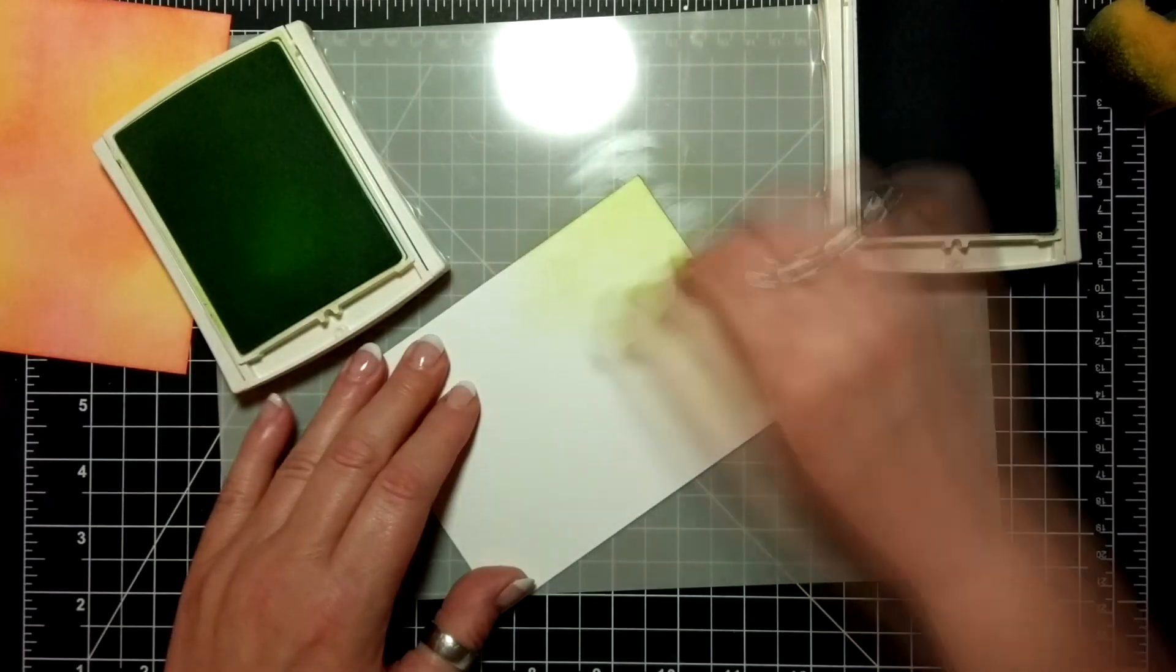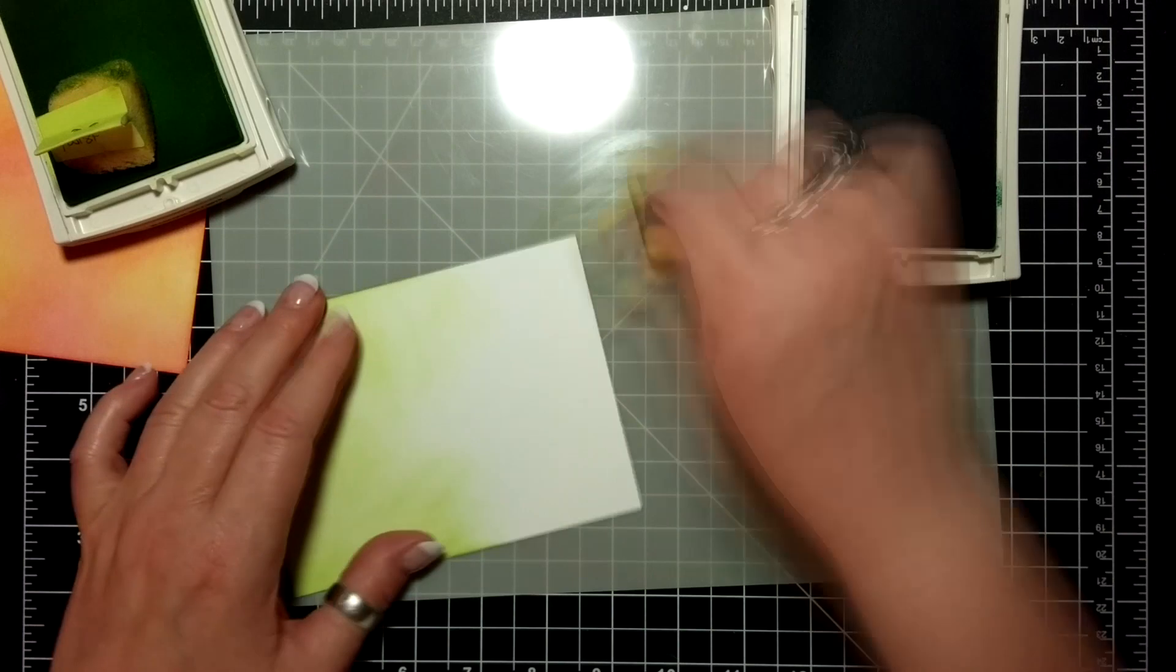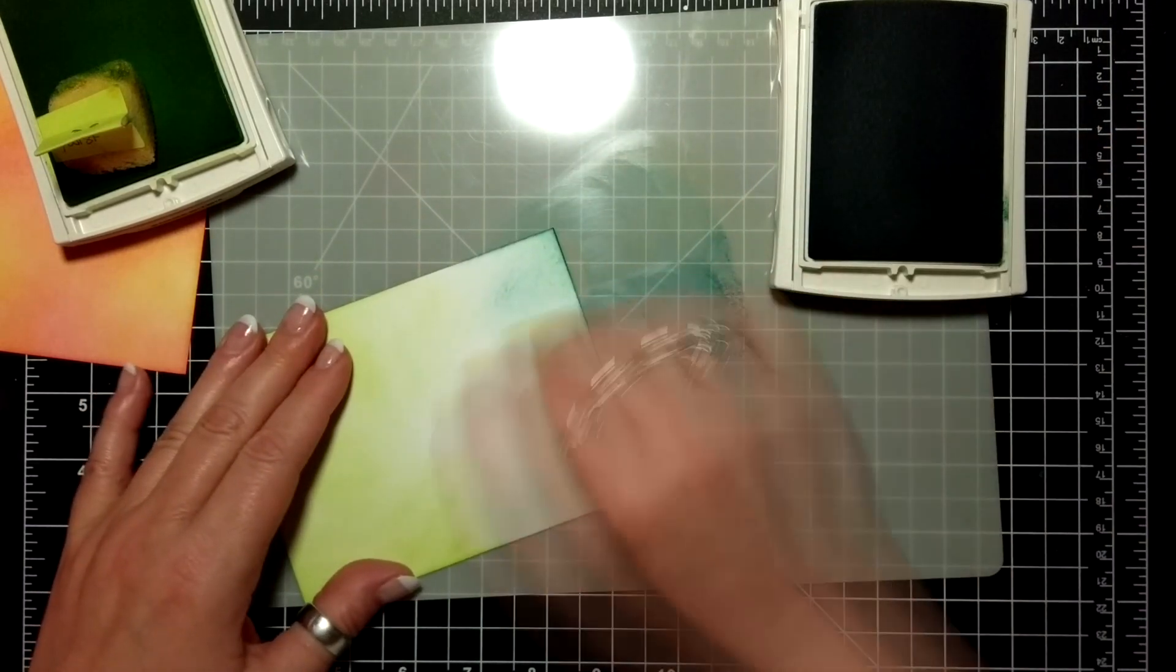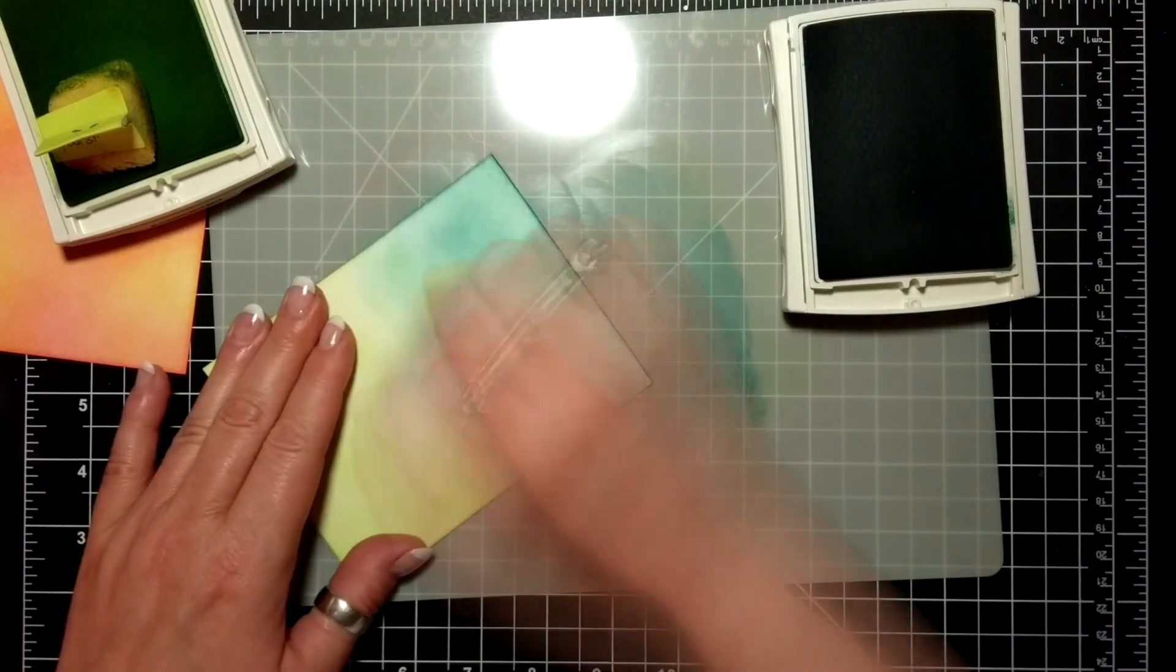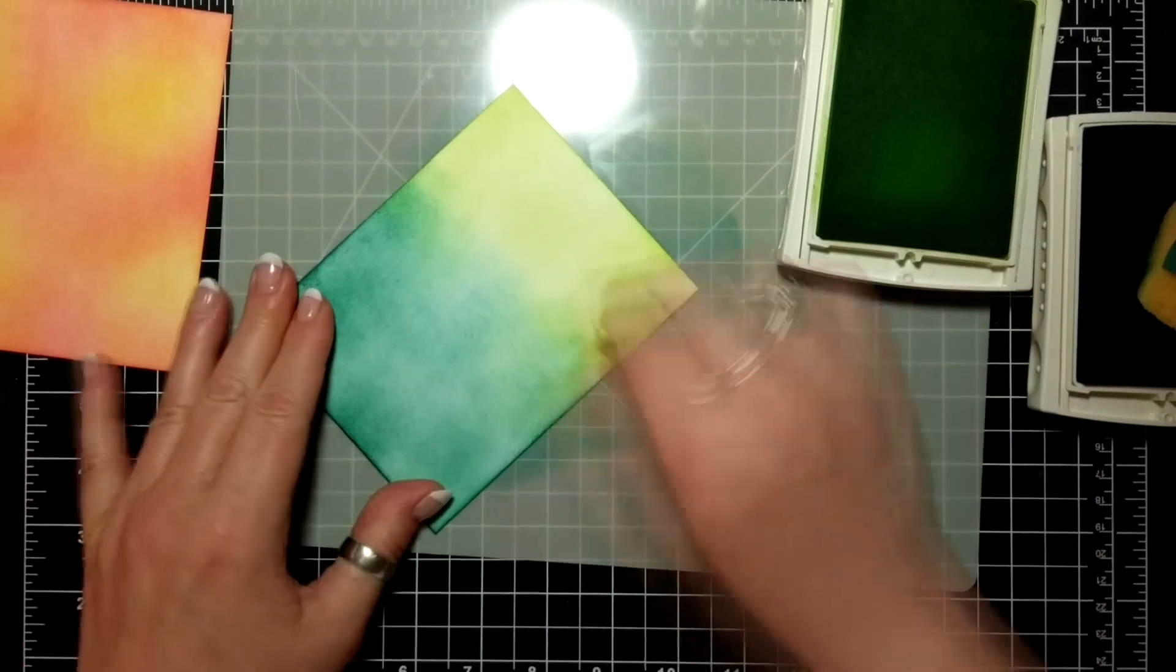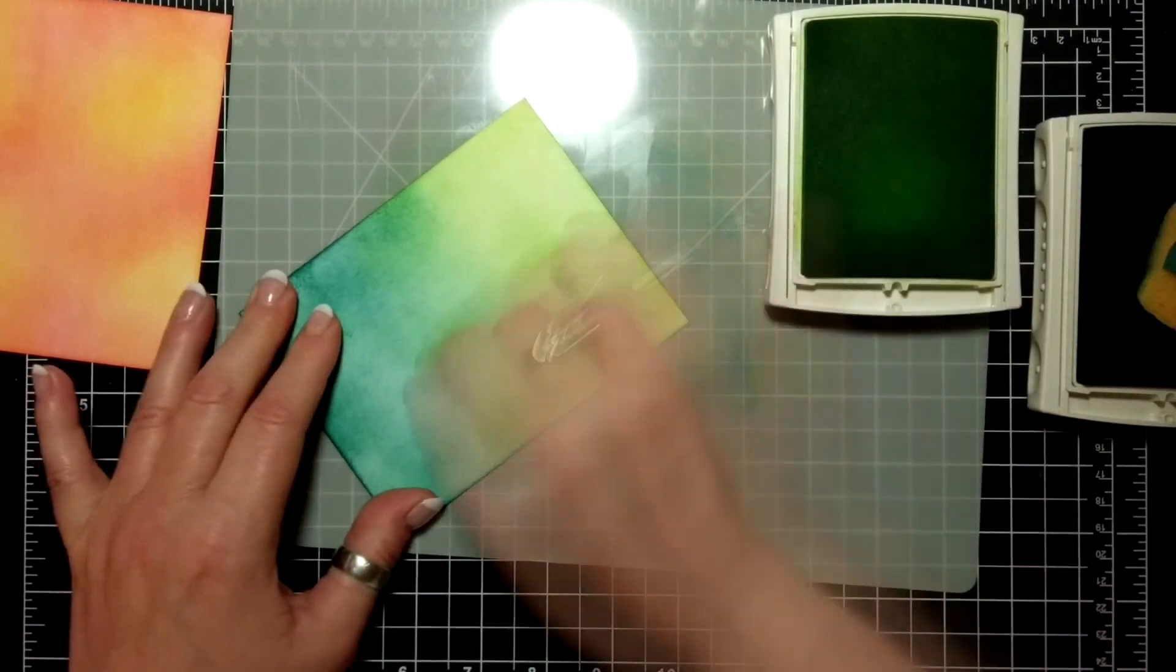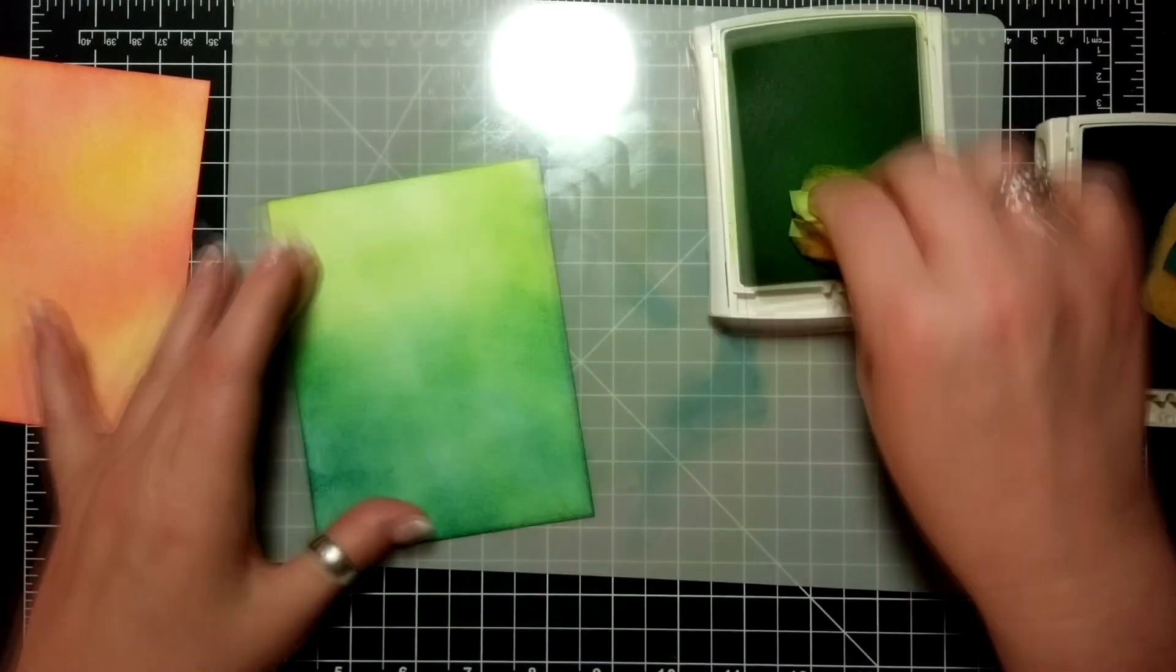I'm doing the top with Lemon Lime Twist, the bottom with Tranquil Tide, and then sort of blending them together. I'm not too worried about blending too much—it doesn't have to be perfect because these are going to be splashed with water and then die cut.